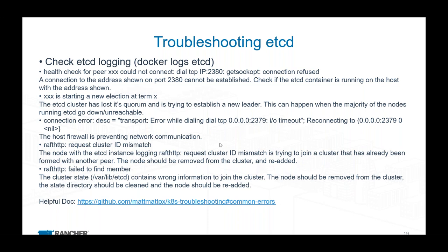Another big one is firewall rules. If everything's running fine and then suddenly all the nodes can't connect to each other, it's potentially a firewall or networking issue. We see this a lot with security groups that are really restrictive, where suddenly a node gets moved and then can't connect to any other nodes.